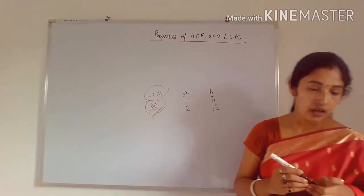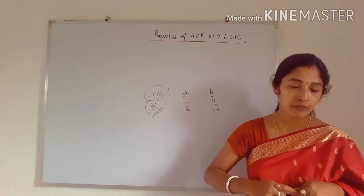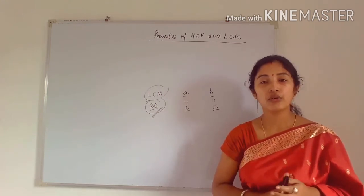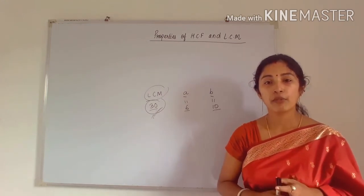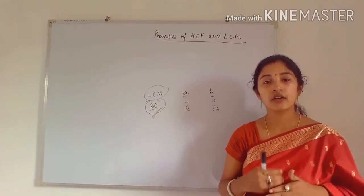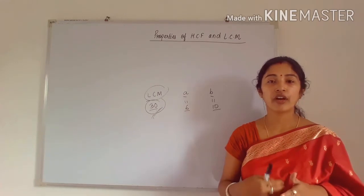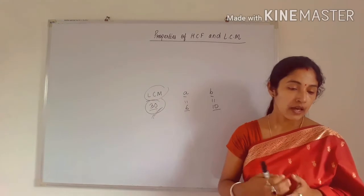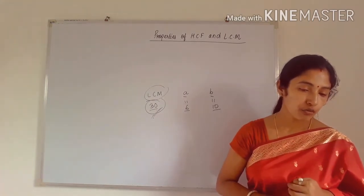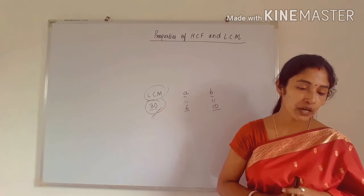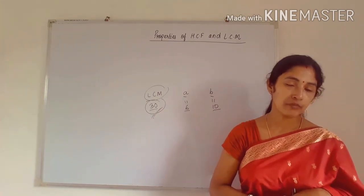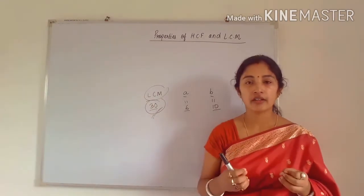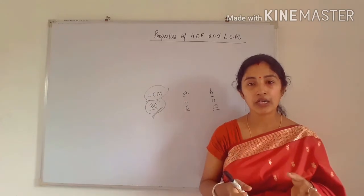Third property: HCF of two or more co-prime numbers is equal to 1. Because co-prime numbers don't have any common factor other than 1, the highest common factor will be 1 only. Fourth property: LCM of co-prime numbers is equal to the product of those co-prime numbers, since there is no common factor between them.